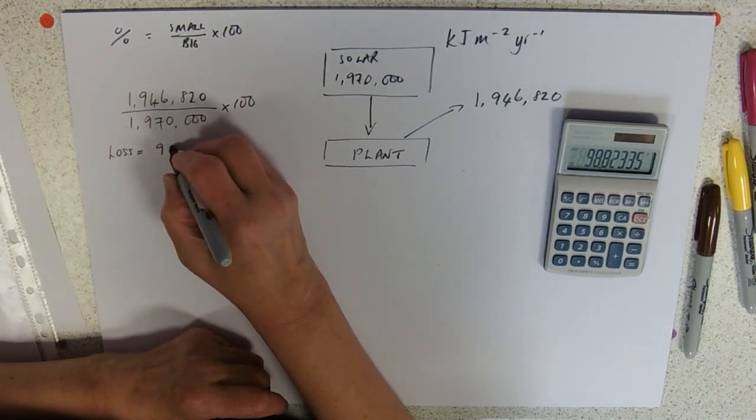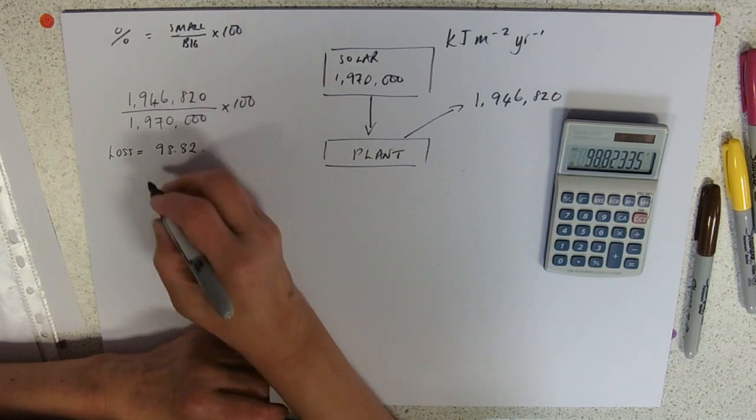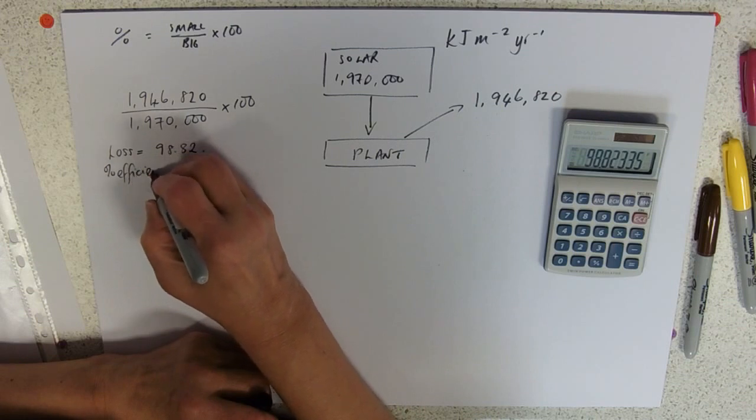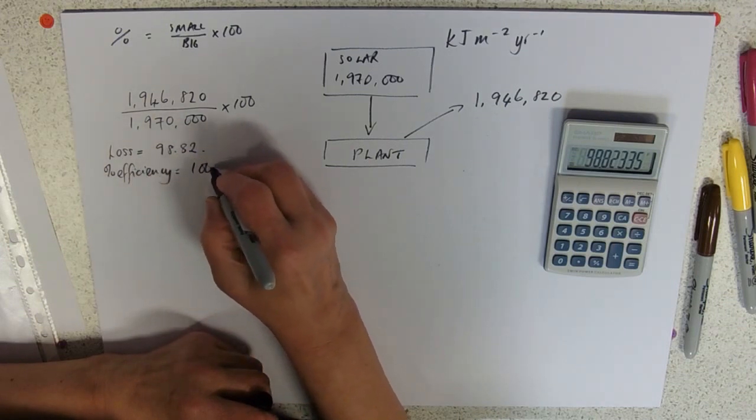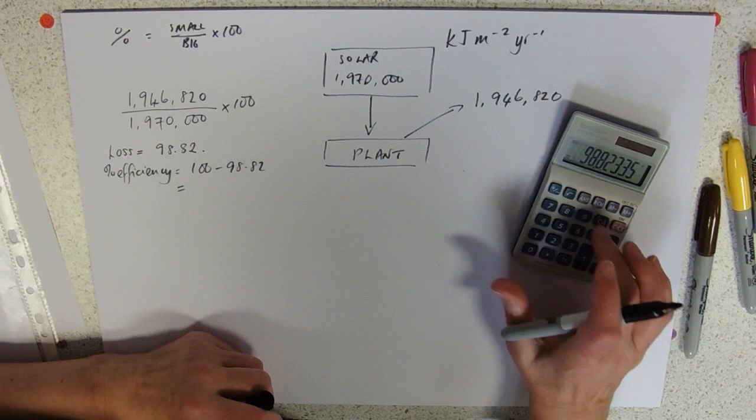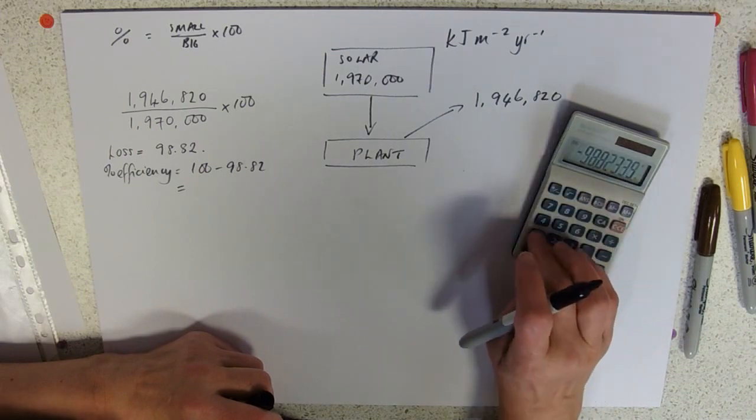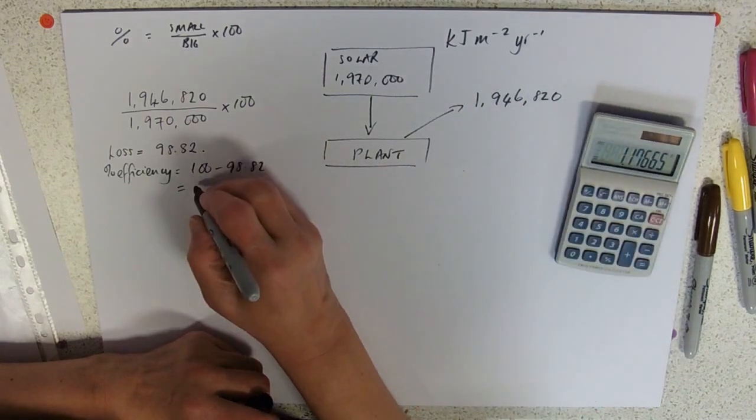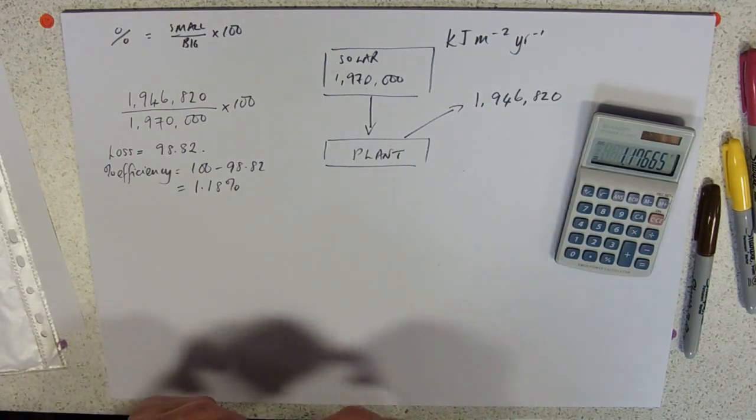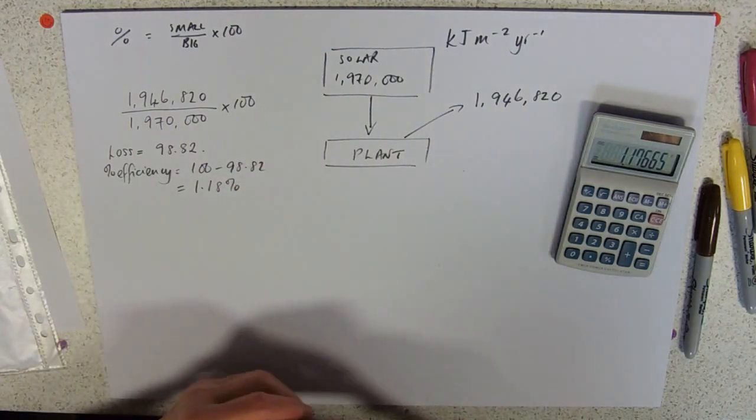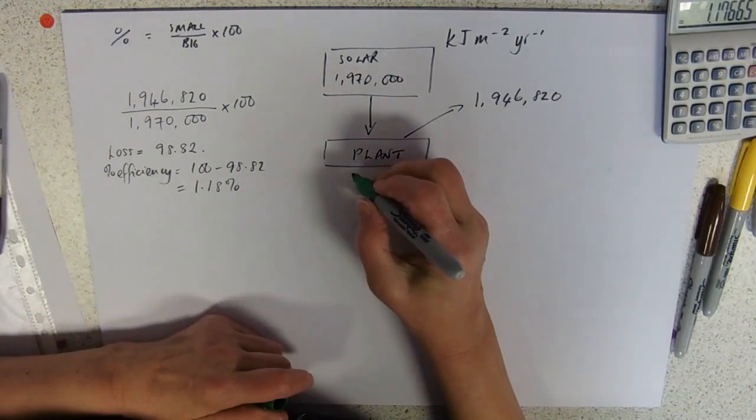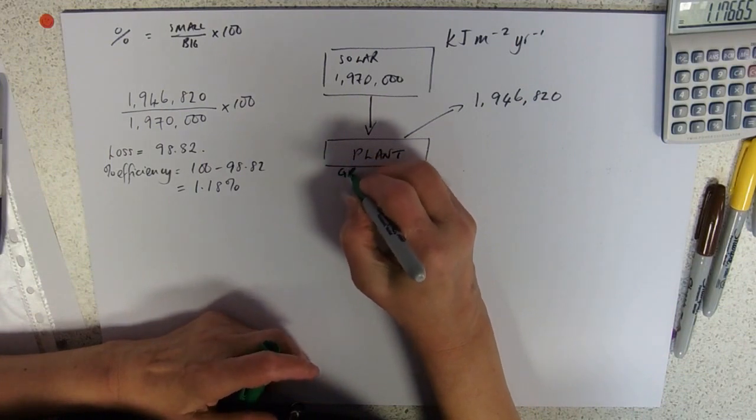So the loss is ninety-eight point eight two percent, which means the percentage efficiency then is one hundred minus ninety-eight point eight two, which equals, and this is astonishingly small, one point one eight percent. So that means that that plant is fixing only one percent of the solar energy, and that of course represents the gross production.